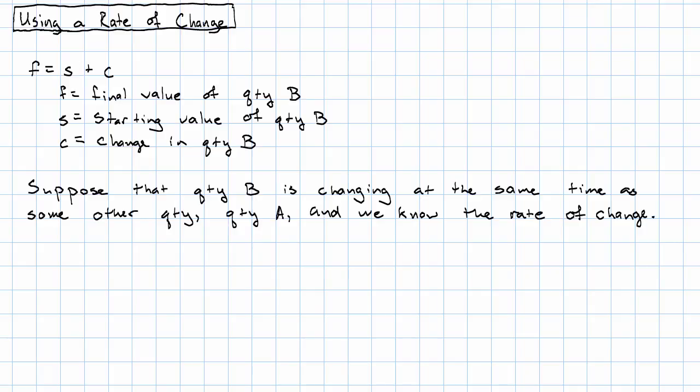Suppose we know that quantity B is changing at the same time as some other quantity. We'll call it quantity A, and we know the rate of change.